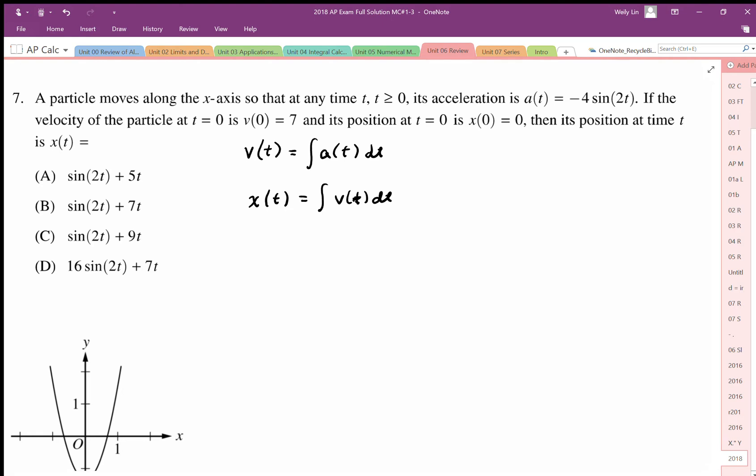We've been given some information here, some initial conditions. This initial condition is for velocity, so it's to do with this equation here when we anti-differentiate. And we've also been given an initial condition here, which to do with the position function, so with this function when we anti-differentiate.